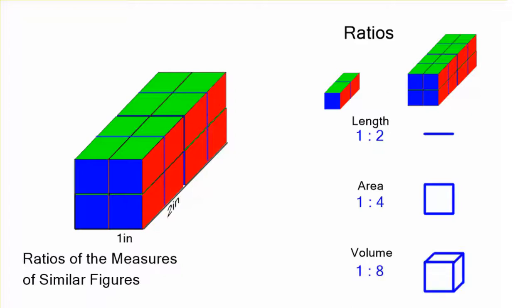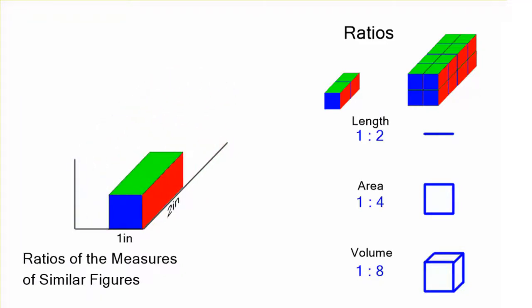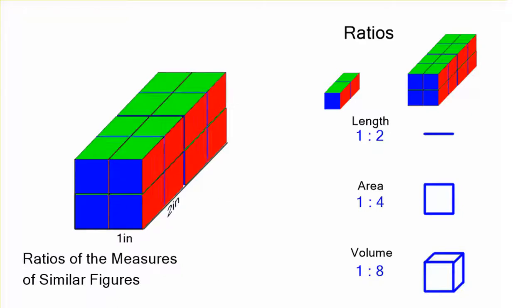Now the volume is 3 dimensional. It's going to have a ratio of 1 to 8. There's 8 times as many cubes in the larger figure. Just remember how it was before: 1, 2, 3, 4, 5, 6, 7, 8. There's going to be 8 times as many cubes.